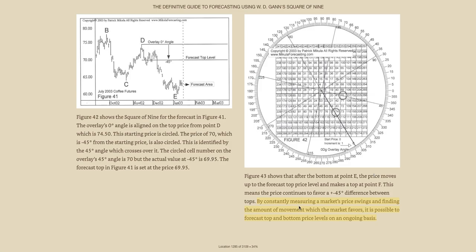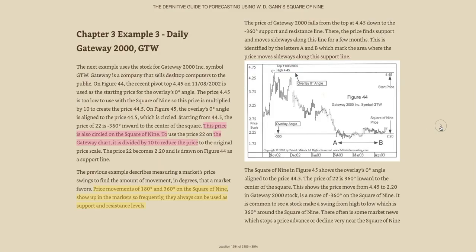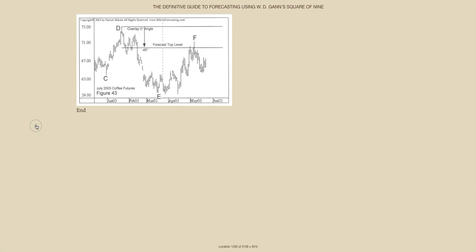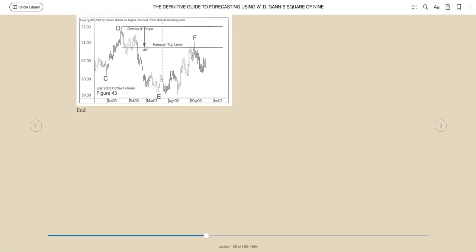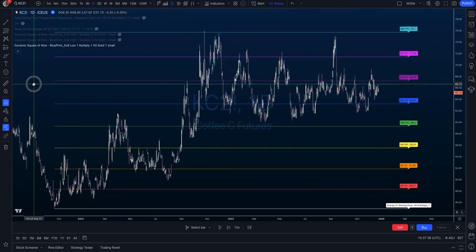By consistently measuring a price market swing and finding the amount of movement which the market favors, it's possible to forecast top and bottom price levels on an ongoing basis. We'll demonstrate that on the same chart. This is Coffee Futures 2003, pulled from the same example in the book. Here we have the indicator — it's called Dynamic Square of Nine, by Blueprint.